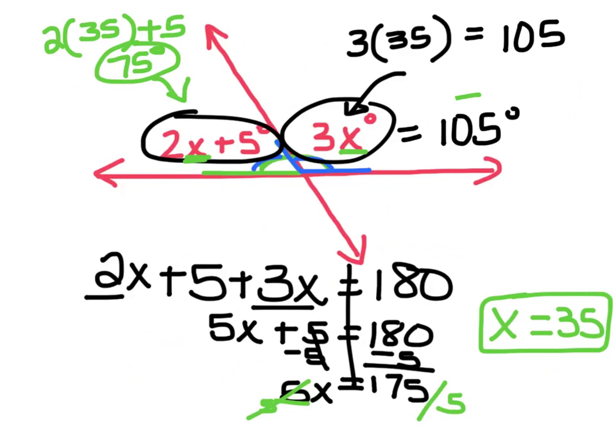To test this, check whether the angles together make 180. They do — 75 plus 105 is 180.